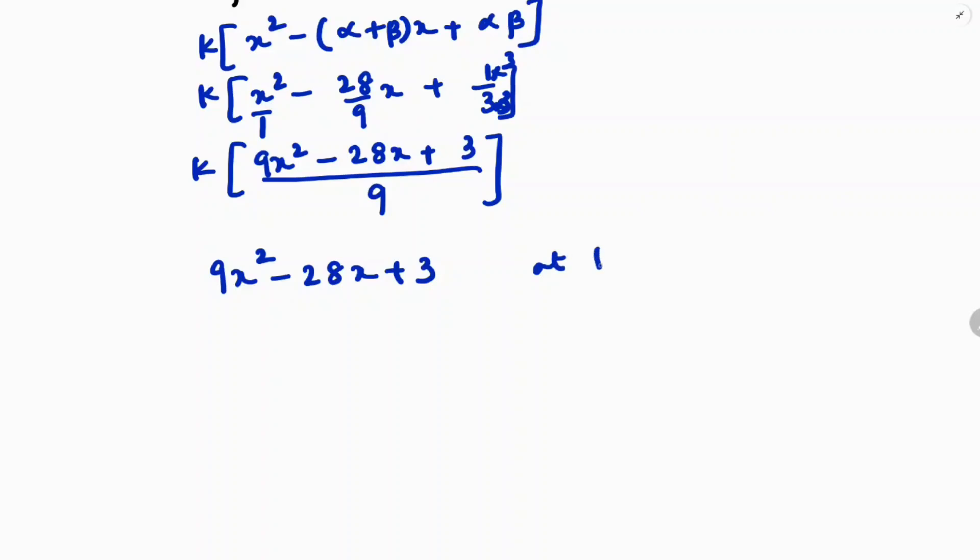At k = 9, the quadratic polynomial is 9x² - 28x + 3.